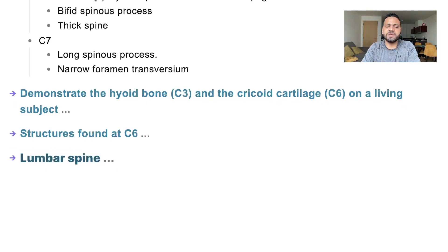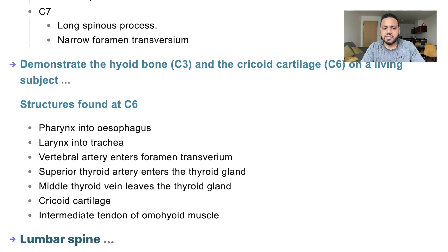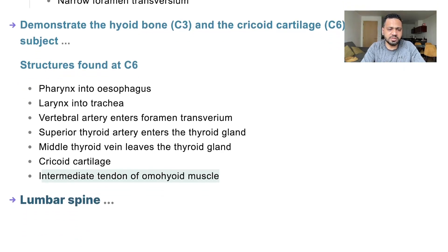What are the structures found at C6? We have the pharynx and larynx — the pharynx turns into the esophagus, and the larynx turns into the trachea. The vertebral artery enters at C6, and the cricoid cartilage is present. The superior thyroid artery enters the gland, and the middle thyroid vein leaves the gland. The seventh structure is the intermediate tendon of the omohyoid muscle.